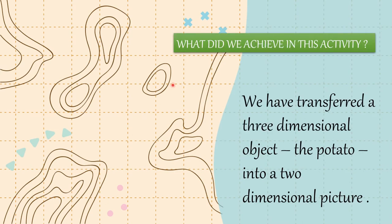What did we achieve in this activity? We have transferred a three-dimensional object — the potato — into a two-dimensional picture. In reality, it is not possible to make the slices of a mountain or any other landform and place them on paper or on the ground to draw a two-dimensional picture of that landform. For this, different mathematical methods and survey methods are applied.